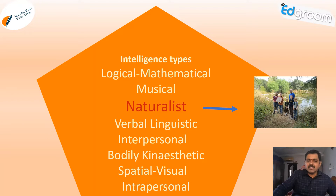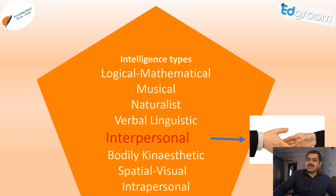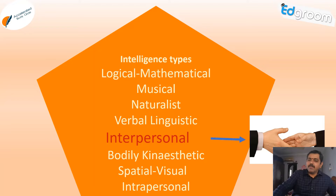Next is verbal and linguistic intelligence. You can see in the entertainment industry how anchors, newsreaders, and public speakers are evolving. Translators also fall into this category and can make careers in these fields. Then there is interpersonal skills intelligence. We now have event managers, program managers, marriage brokers, and contractors — people having interpersonal skills who mingle easily with social platforms and gatherings. This interpersonal skill is an important intelligence type right now.